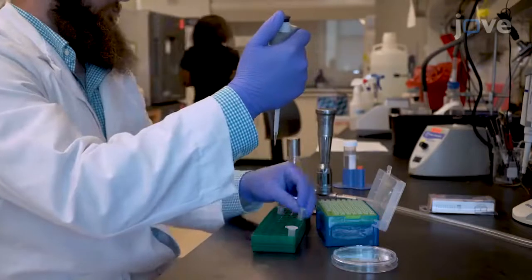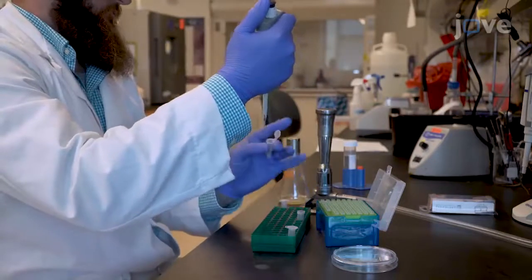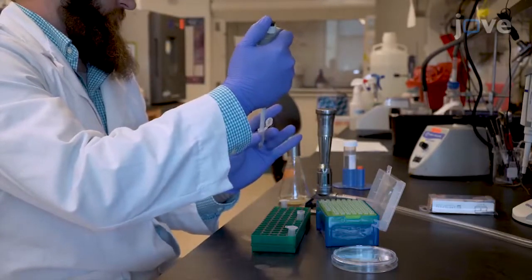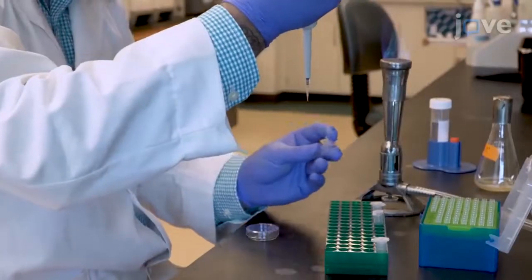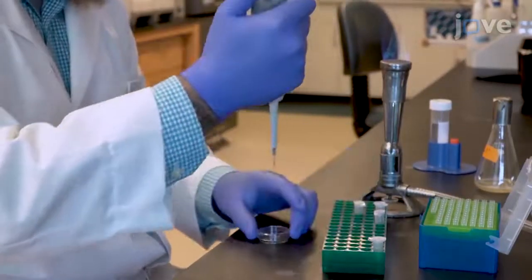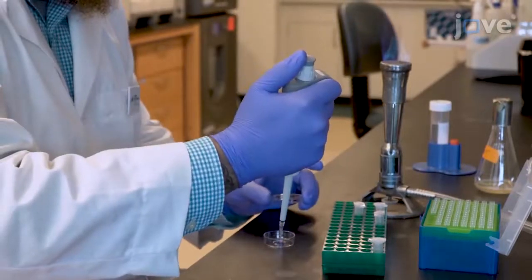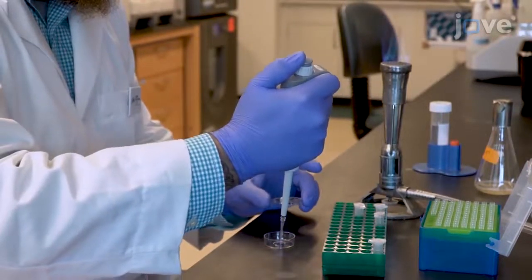Begin by labeling a 5 to 50 microliter aliquot of the cell culture of interest with an appropriate membrane staining dye and adding 5 microliters of the stained bacterial cells onto a cover slip on the bottom of a 35 millimeter glass bottom culture dish.